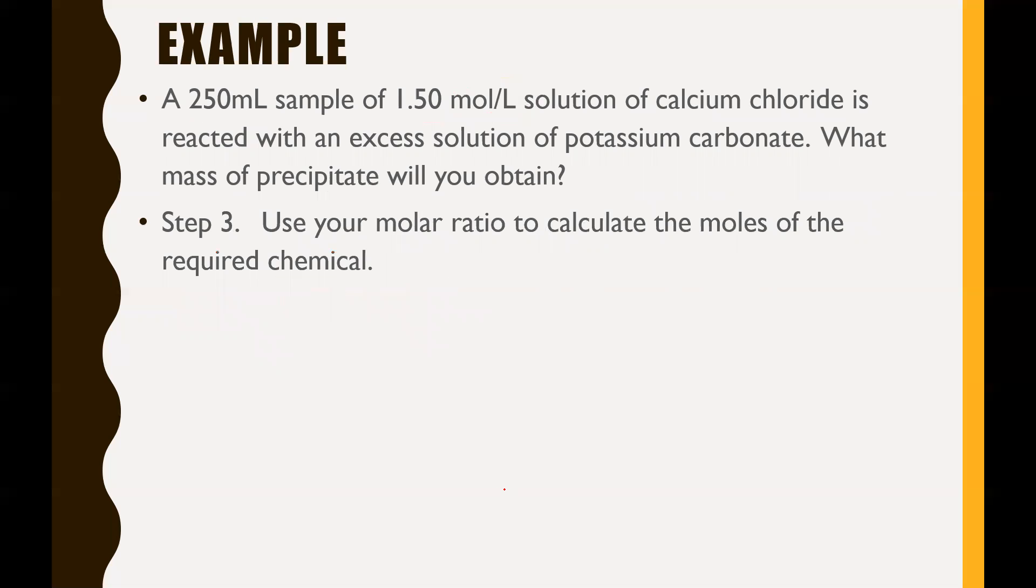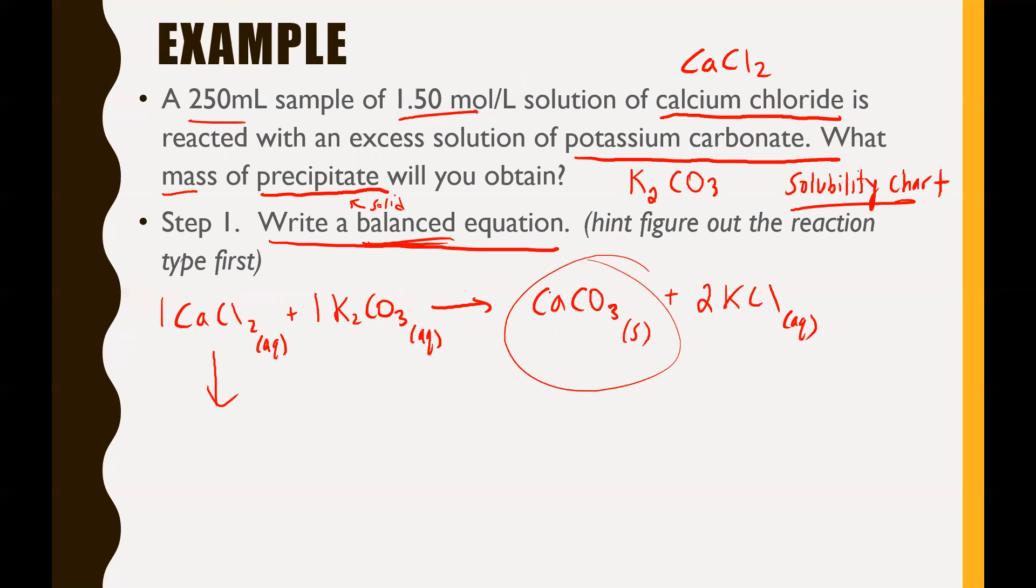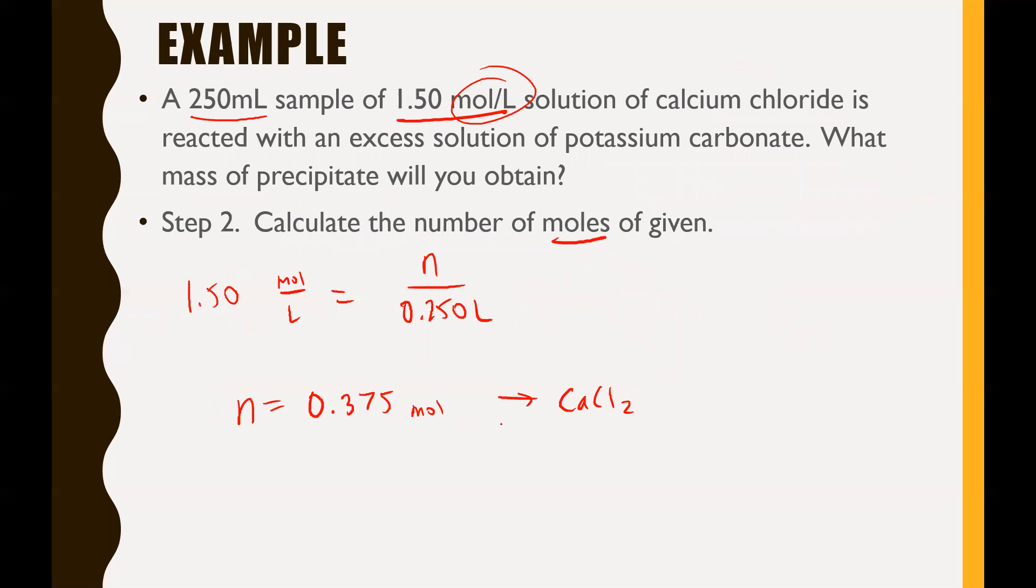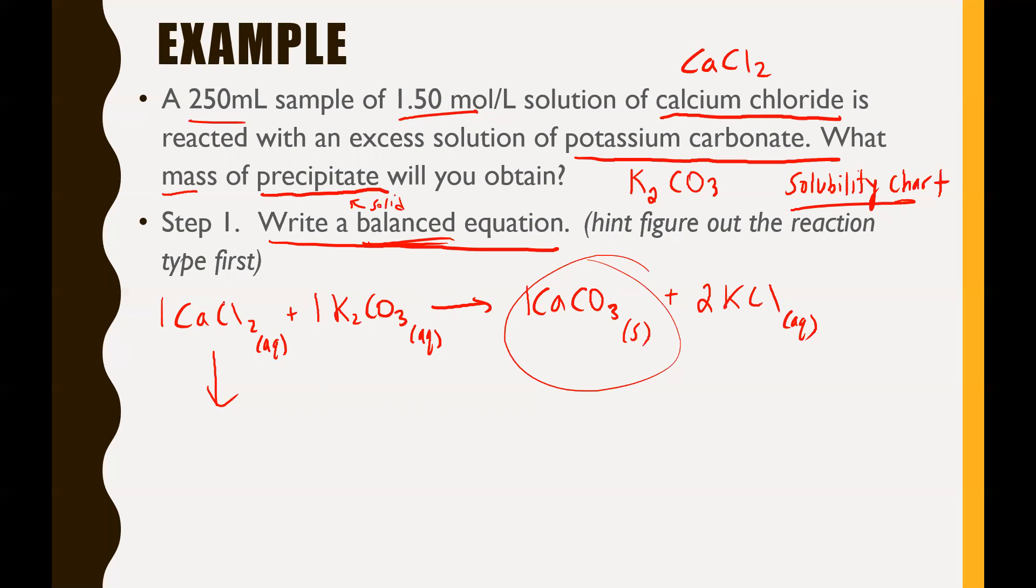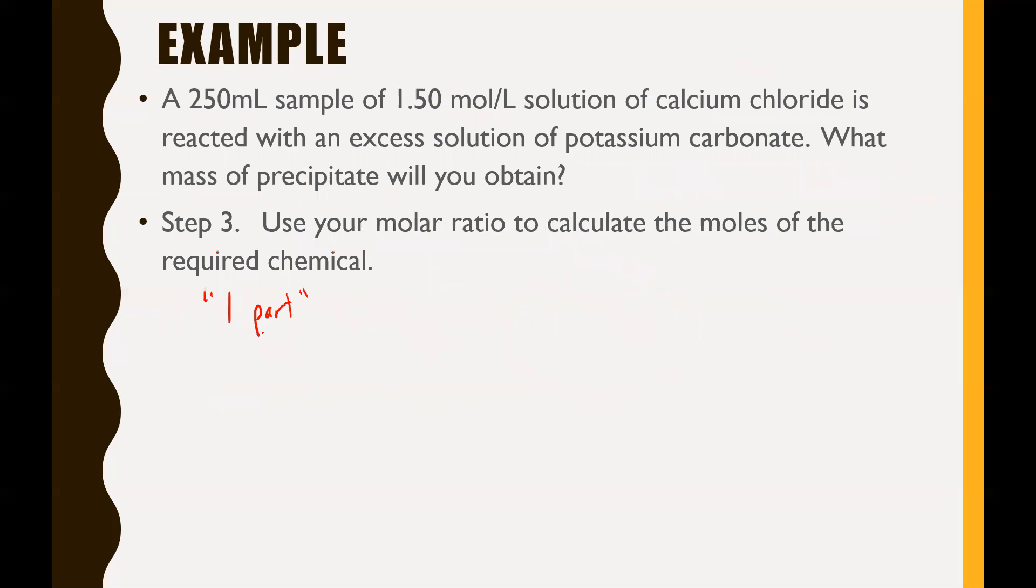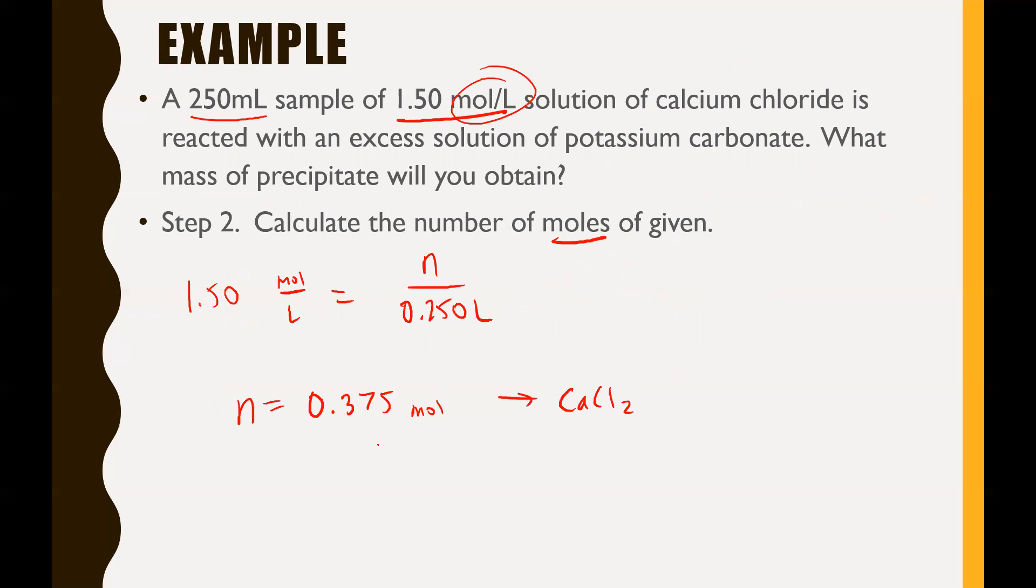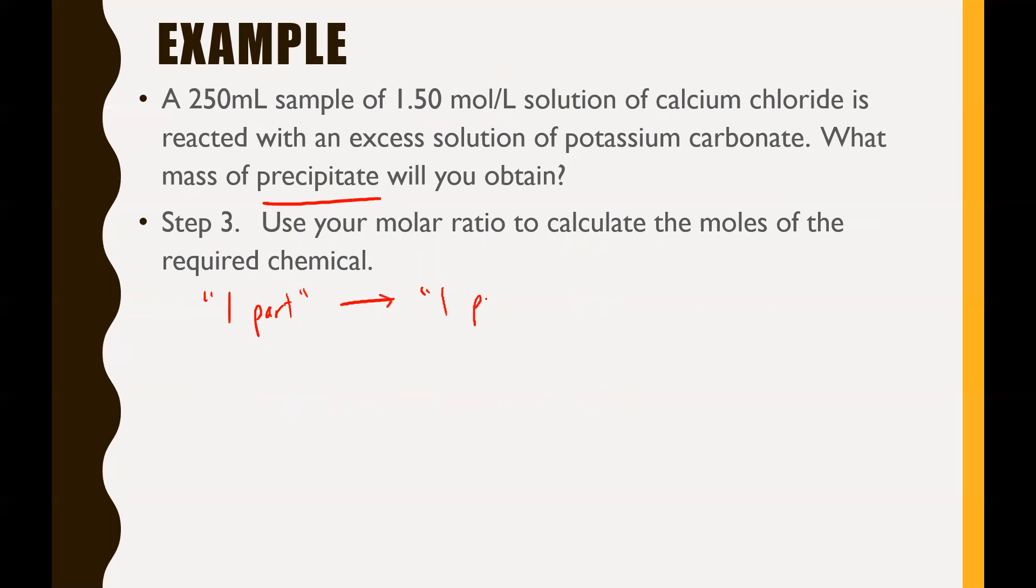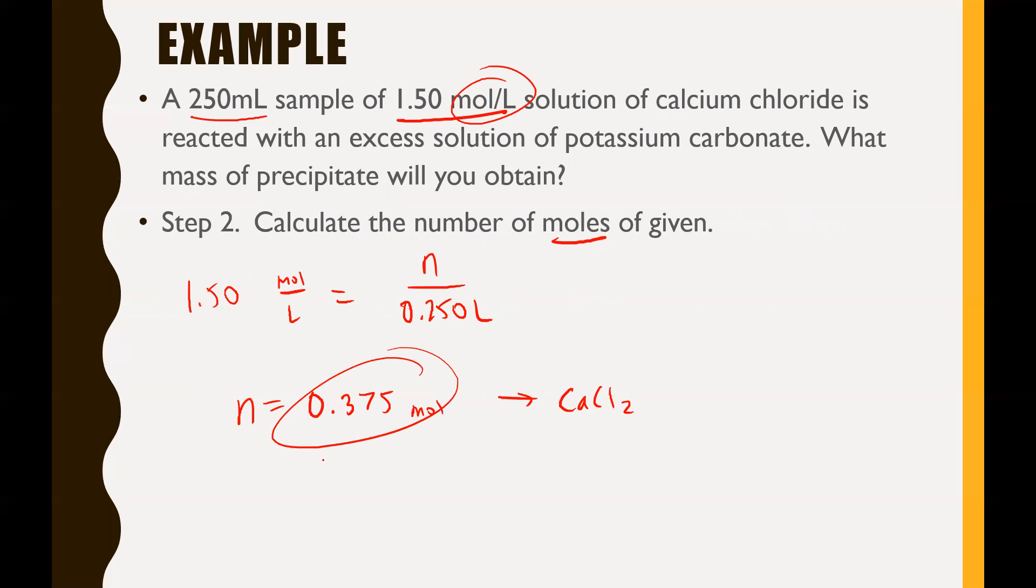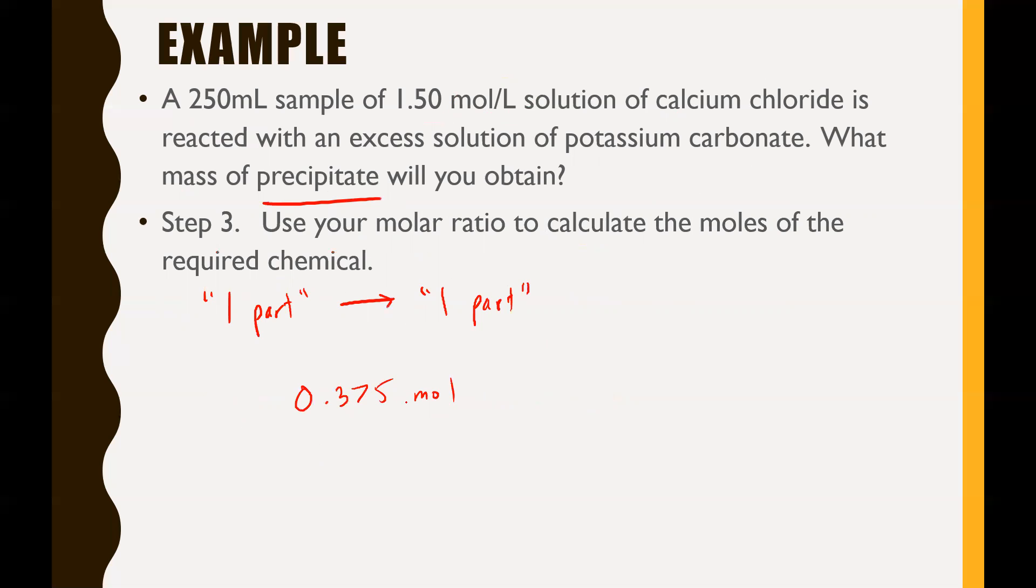Next part: use your molar ratio to calculate the moles of the required chemical. By molar ratio, we're talking about the coefficients in front of all these. Almost all of them have a 1, the only one that has a 2 is KCl. If we look at this amount of moles we found for calcium chloride, that represents one part because calcium chloride is just one part. So we have one part, 0.375 moles. What we're looking for is the precipitate, and if you go back to your chemical equation, the precipitate is also one part. We're going from one part to another one part. It doesn't get any easier because we know what one part is in terms of moles. Therefore, 0.375 moles is also how much calcium carbonate we have.